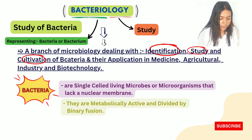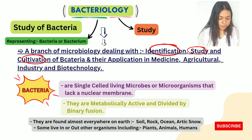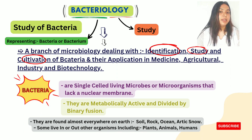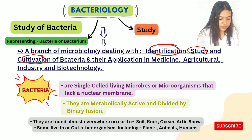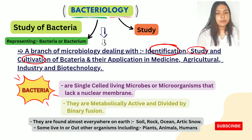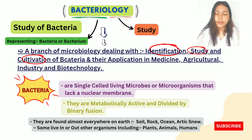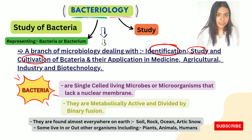Bacteria are found almost everywhere on Earth — in soil, rock, oceans, and arctic snow. It is a cosmopolitan thing; you will find bacteria almost everywhere. Some live in or on other organisms, including plants, animals, and humans. That covers the basic knowledge on this first page.